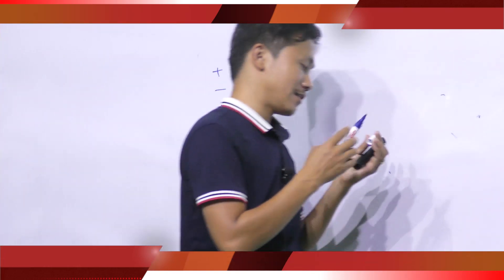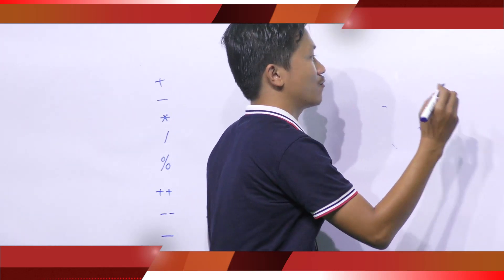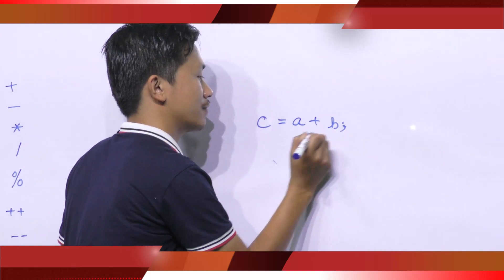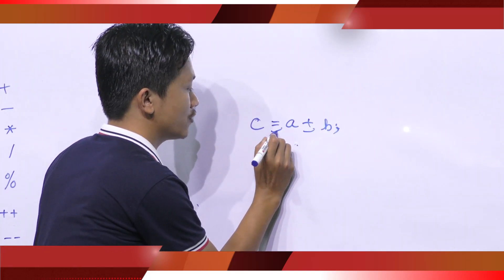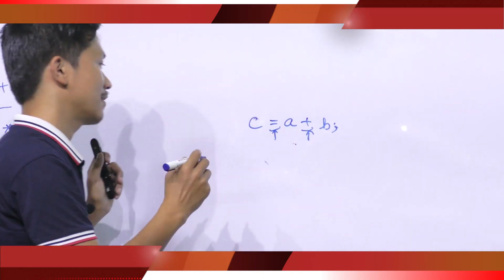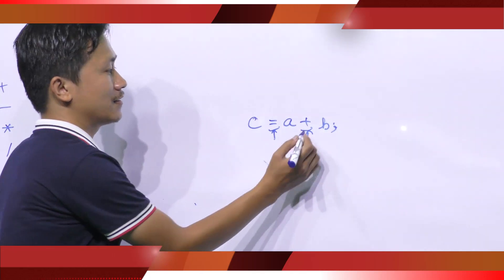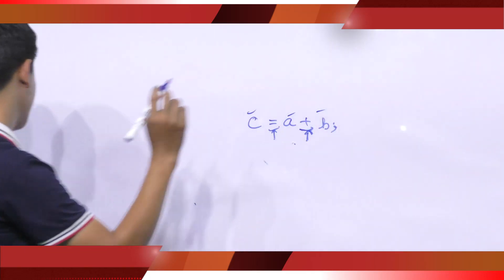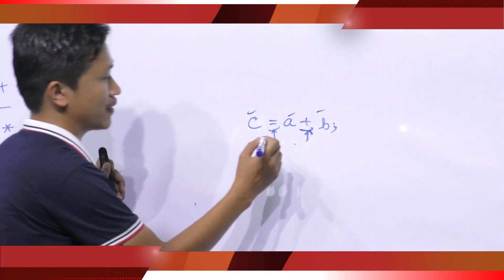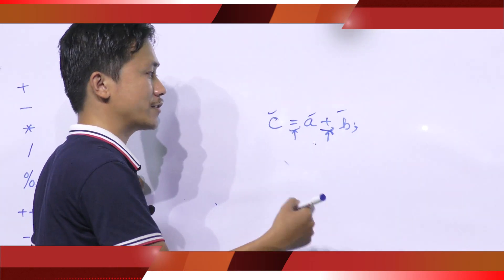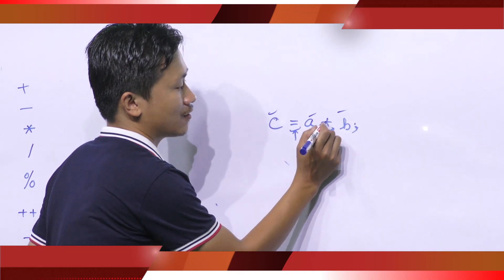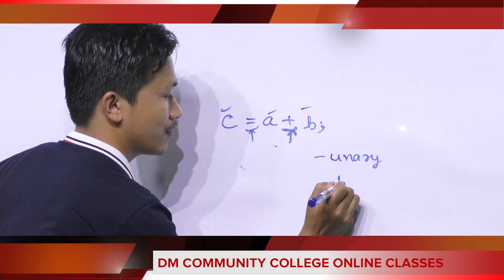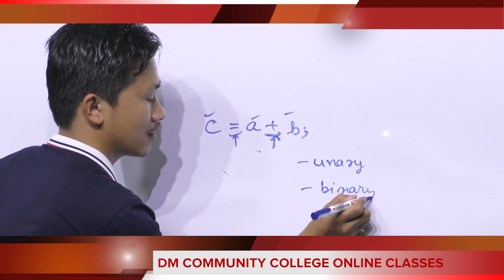Before this, I will introduce you about operators and operands. Suppose the last example: C equal to A plus B. Here, these two symbols are known as operators, and the data items on which these operators act upon are known as operands. Depending upon the number of operands on which an operator acts, these operators can be of type unary, binary, or ternary.